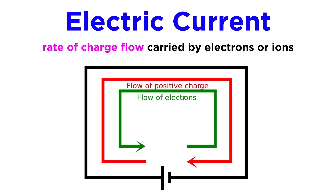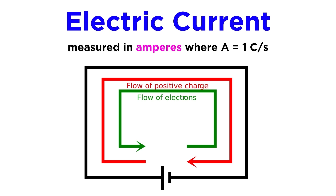Electrical charge will typically flow in the form of electrons or ions, and the rate of charge flow is called electric current. The SI unit for current is the ampere. An ampere is equal to 1 coulomb per second, so in this way electric current can truly be considered a rate.